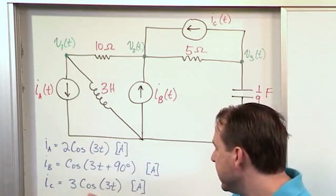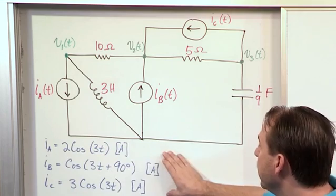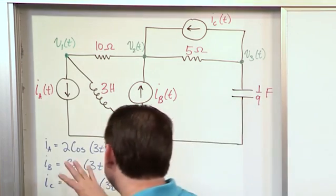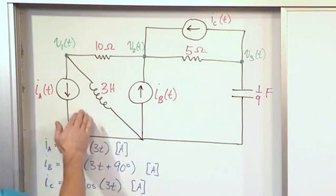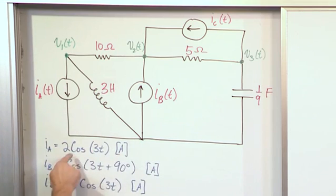Here are the sources in terms of what we know, in terms of the functions of time. So Ia, in terms of a time domain function, is a cosine. Ib is a cosine. Ic is a cosine. Notice the frequency is always three for these linear systems. They're always going to be the same.